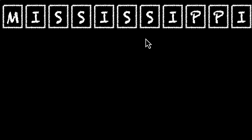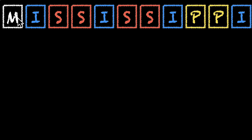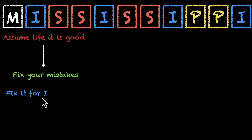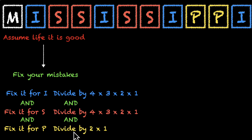M-I-S-S-I-S-S-I-P-P-I — Mississippi. This is one word that always gets thrown at us in this chapter. Let's look at the repetitions: I appears four times, S also appears four times, and P appears twice. The only letter that does not repeat is M. We're fixing for I, S, and P. Because I appears four times, we divide by 4 × 3 × 2 × 1. Same for S, and for P we divide by 2 × 1.